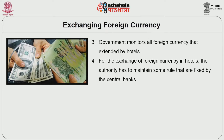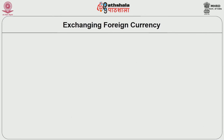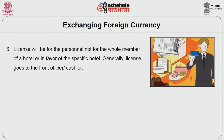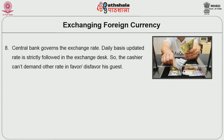A hotel must obtain a license from the government to exchange foreign currency. The license is personal — not for the whole hotel — and generally goes to the front office cashier. Only local currency is exchanged in favor of hotel guests, and the front office should have knowledge of the system before exchanging currency. The central bank governs the exchange rate, and the daily updated rate is strictly followed at the exchange desk; the cashier cannot demand any other rate.